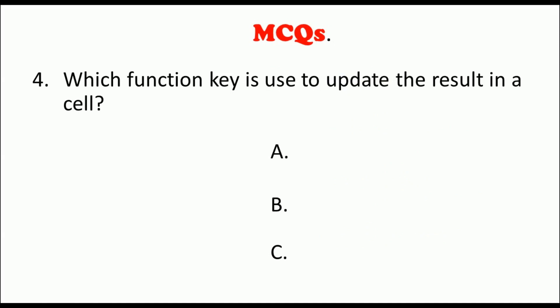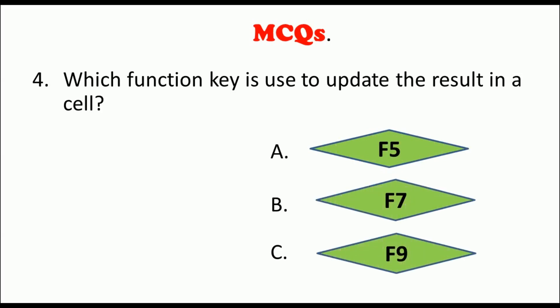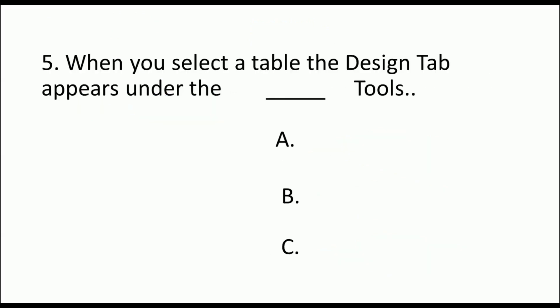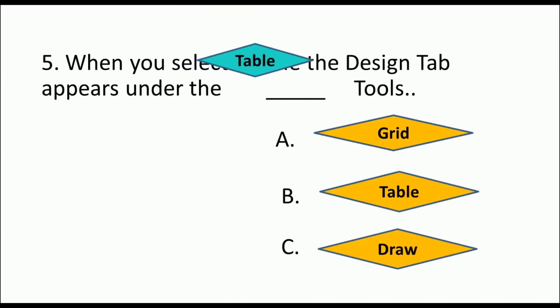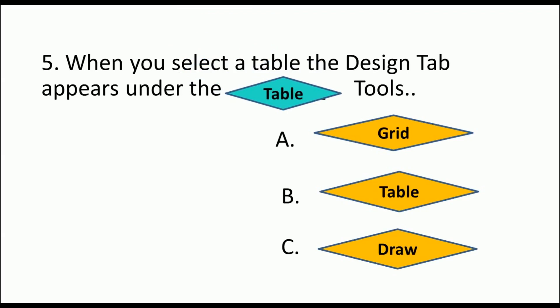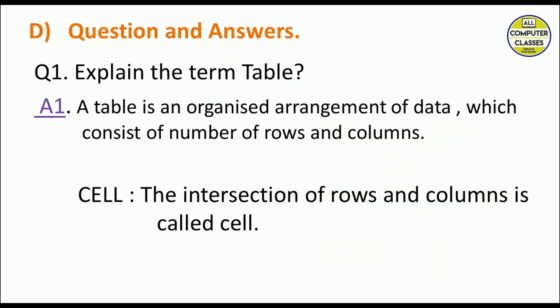Which function key is used to update the result in a cell — F5, F7, or F9? The answer is F9. Next, when you select a table, the Design tab appears under dash Tools. We always get two tabs — Design and Layout — under Table Tools. So Design tab appears under Table Tools.